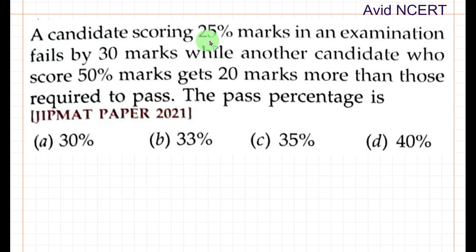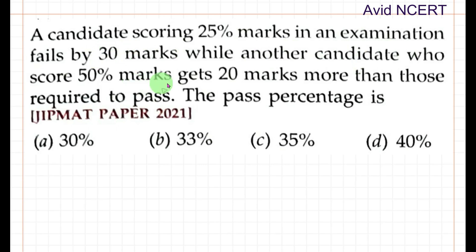A candidate scoring 25 percent marks in an examination fails by 30 marks, while another candidate who scored 50 percent marks gets 20 marks more than the required pass mark. What is the pass percentage?